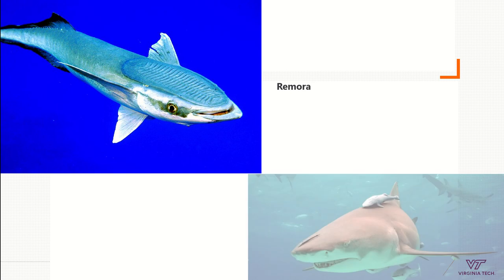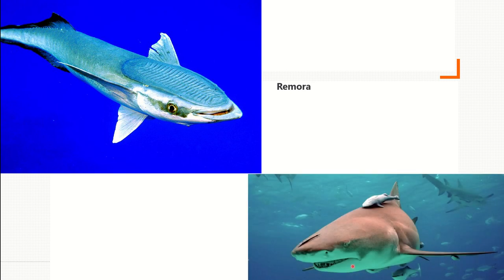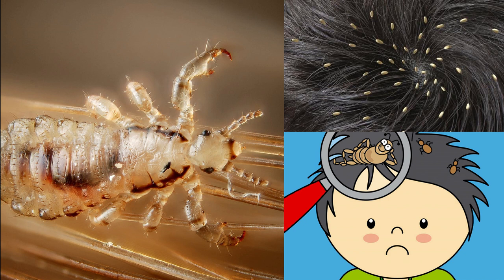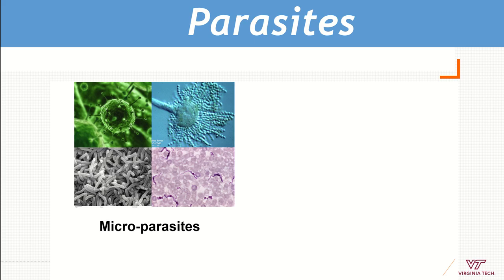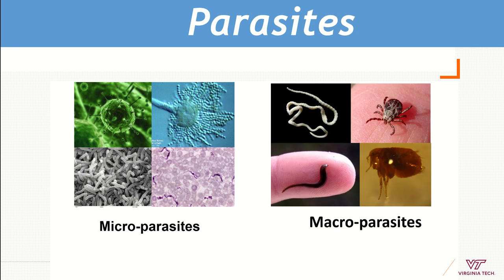The same with remoras, where we know they consume the detritus or leftover food from sharks, maybe without providing evident benefits to the sharks. We also have lice in kids. When I refer to parasites, I'm going to be referring to micro-parasites — those for which we need a microscope, like viruses, bacteria, protozoa, or fungi — and in the case of macro-parasites, I'm referring to fleas, ticks, worms, and leeches.